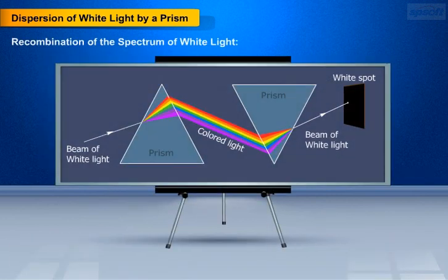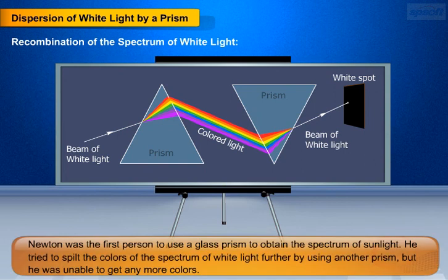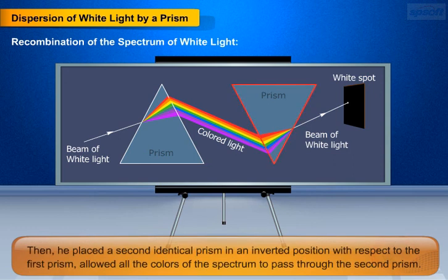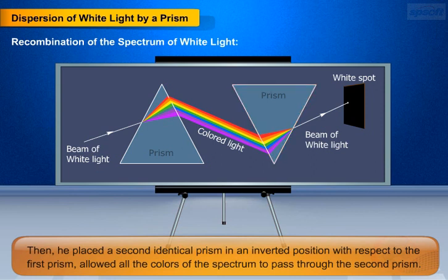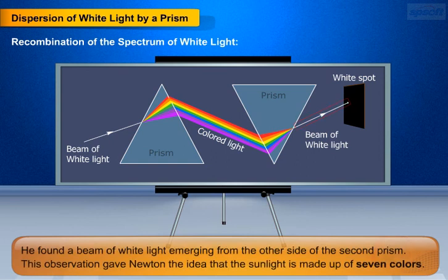Recombination of the spectrum of white light. Newton was the first person to use a glass prism to obtain the spectrum of sunlight. He tried to split the colors of the spectrum of white light further by using another prism, but he was unable to get any more colors. Then he placed a second identical prism in an inverted position with respect to the first prism, and allowed all the colors of the spectrum to pass through the second prism. He found a beam of white light emerging from the other side of the second prism.